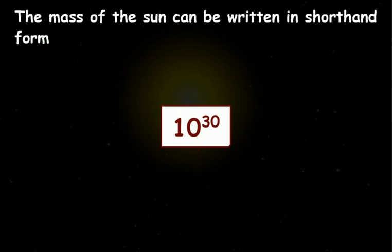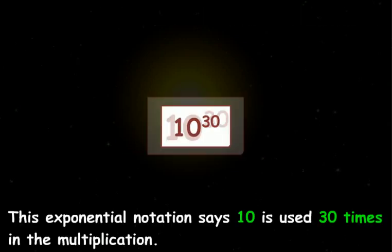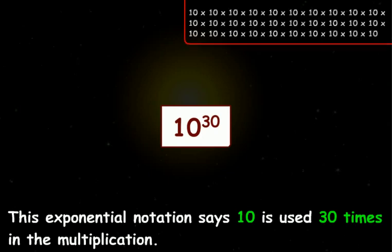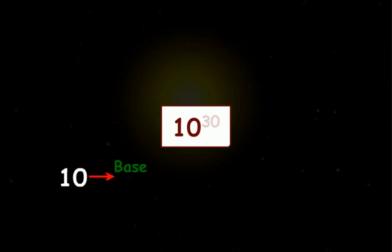We read it as 10 to the power of 30. This exponential notation says 10 is used 30 times in the multiplication. The number 10 is called a base and the number 30 is called an exponent.